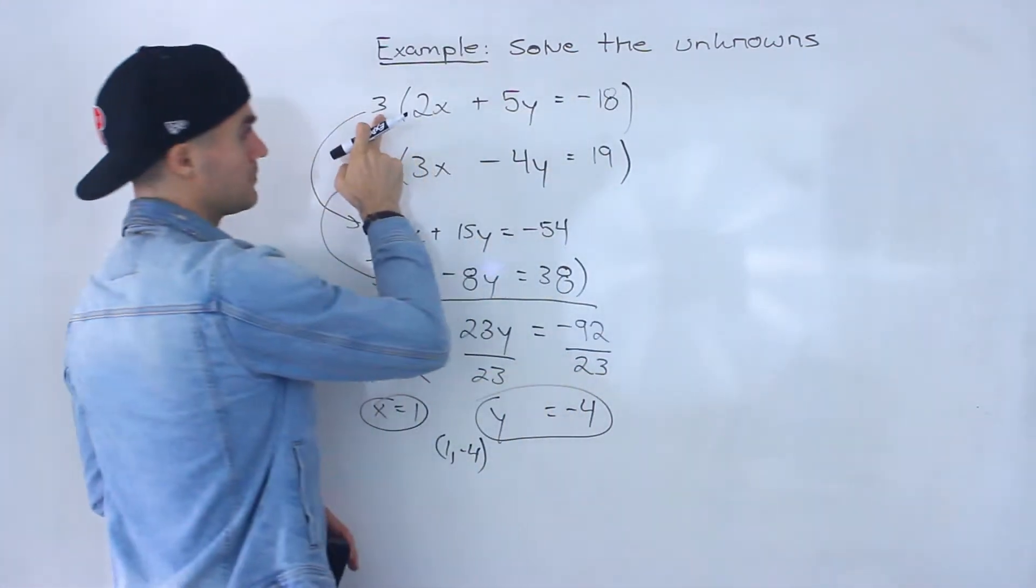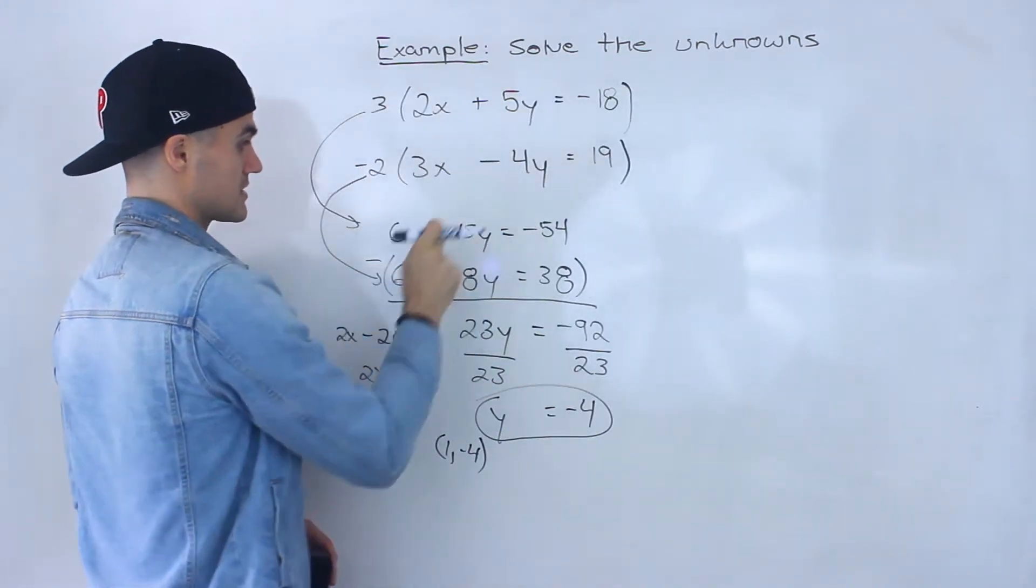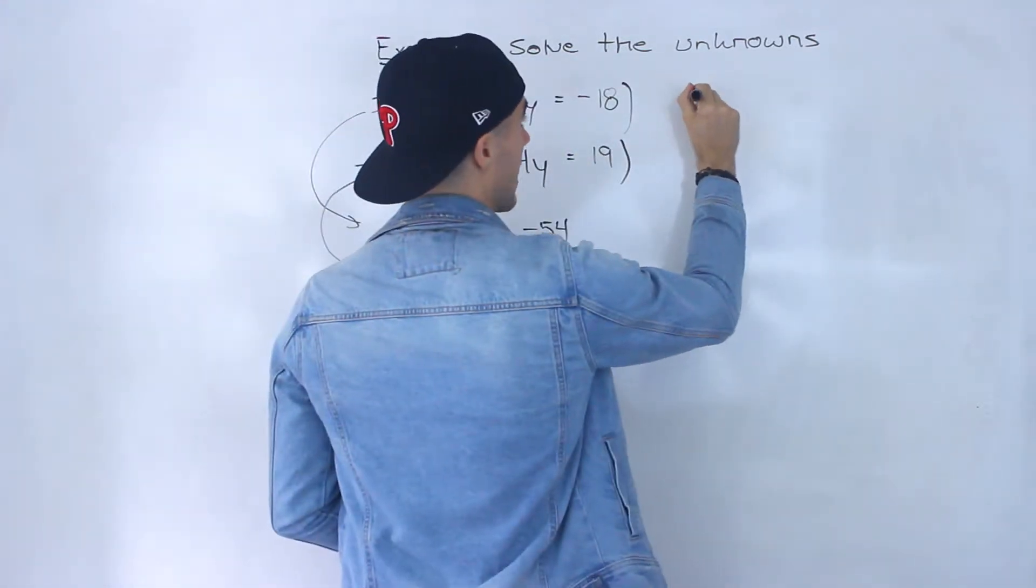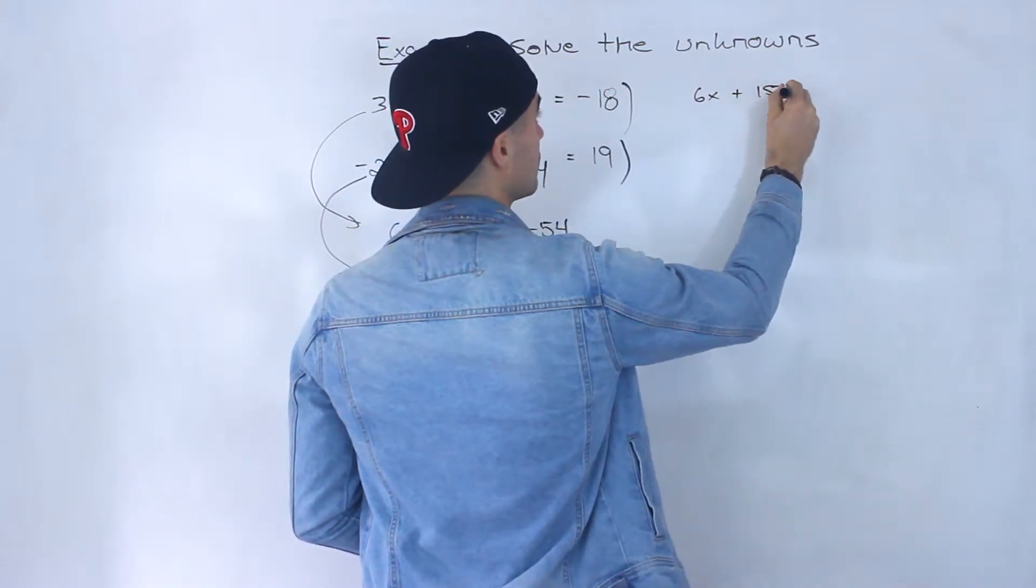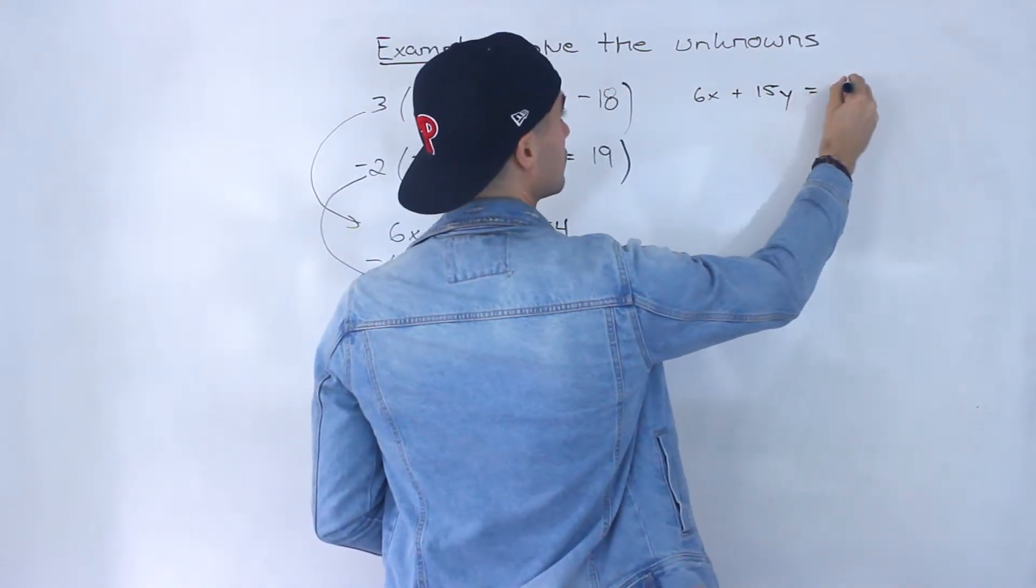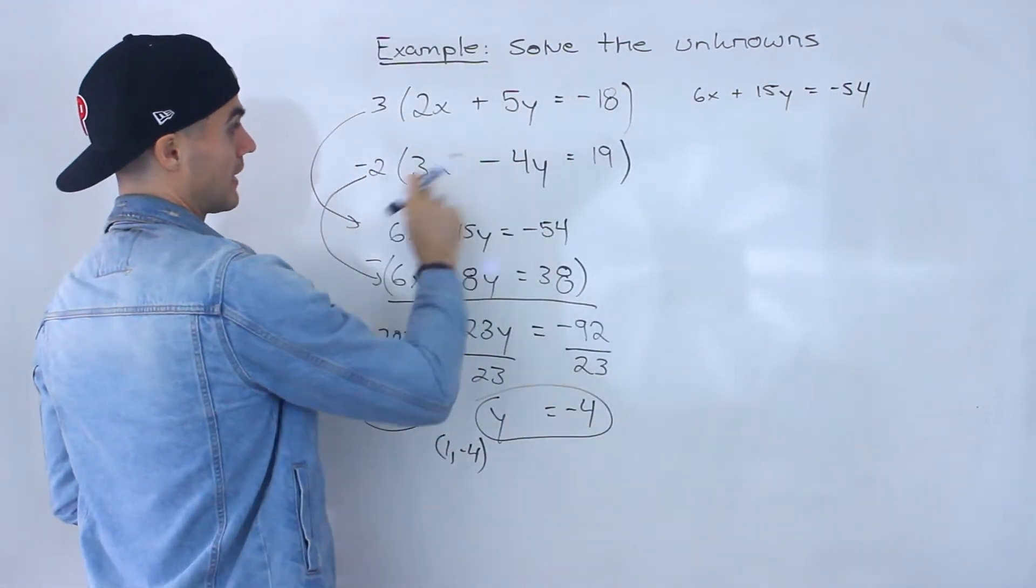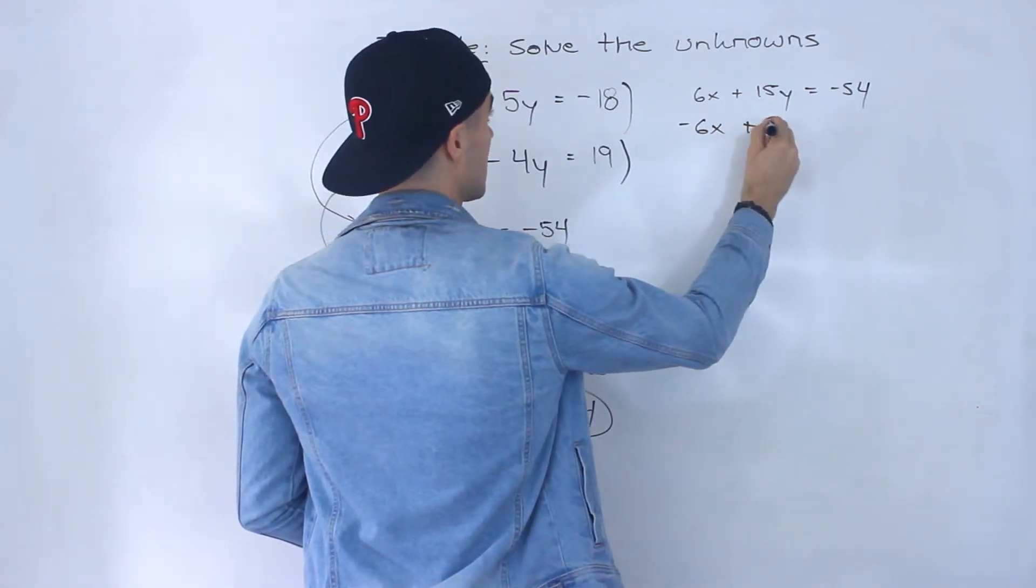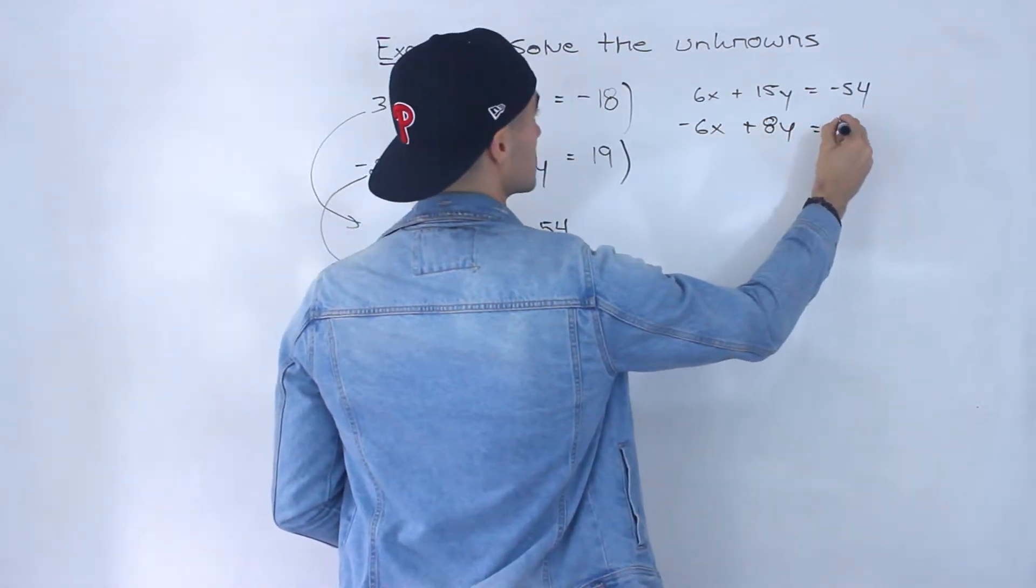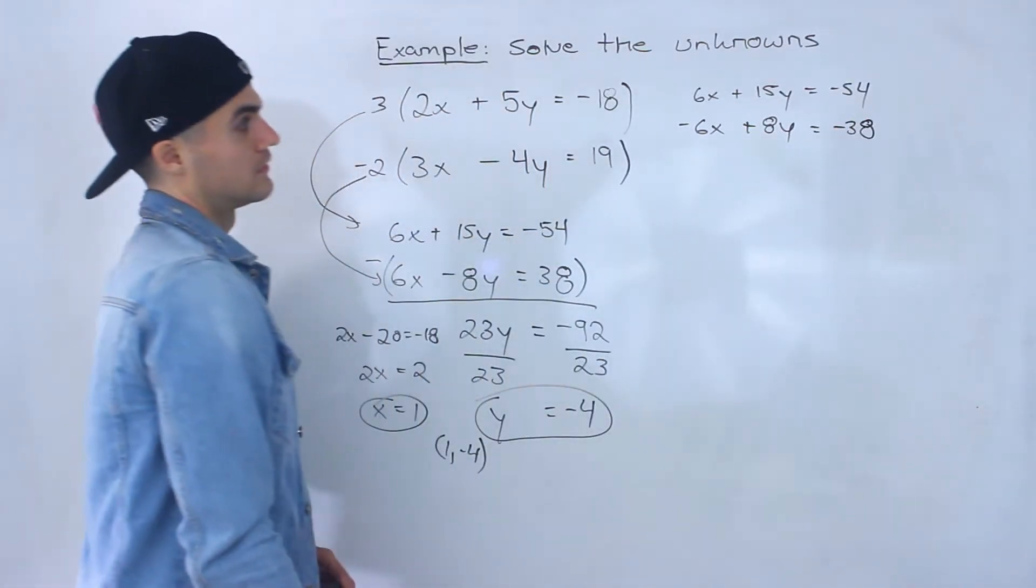I would end up, we're keeping this as 3. So all of this is still going to become this 6x plus 15y equals negative 54. But now if I multiply everything here by negative 2 I'd end up with negative 6x plus 8y equals negative 38.